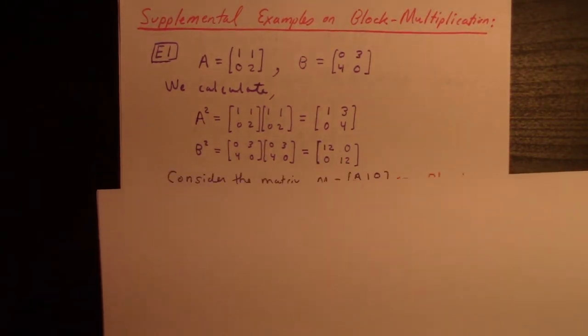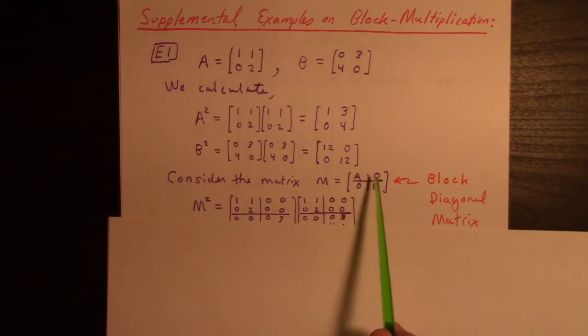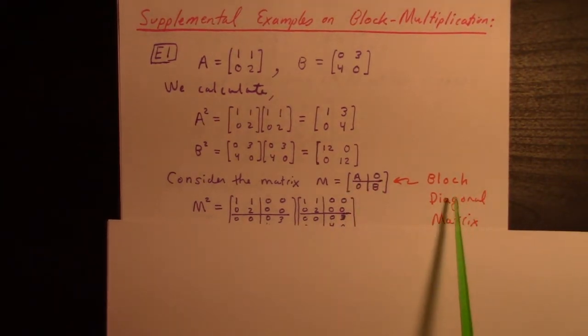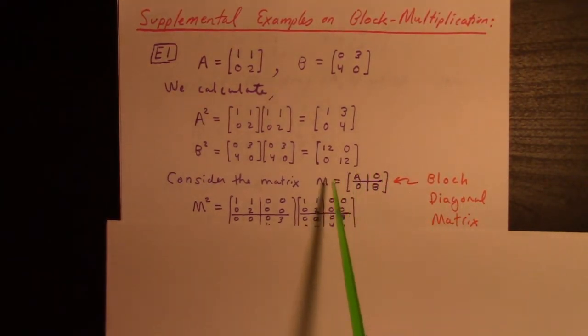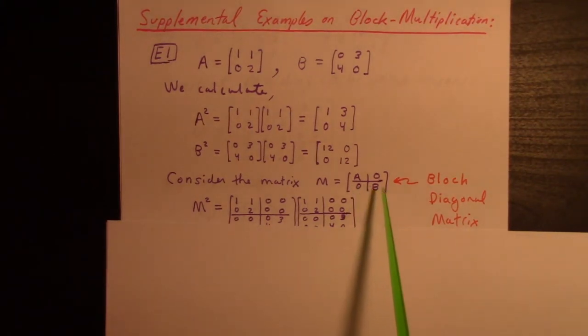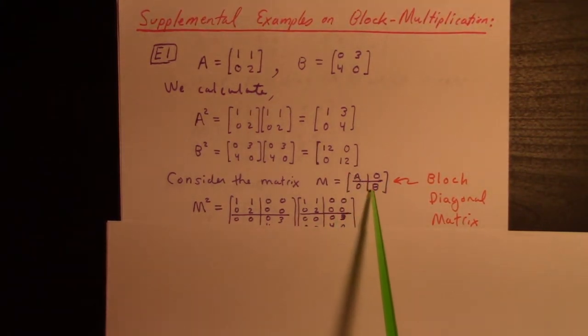If we consider the matrix [A 0; 0 B], this is a block diagonal matrix. It's not diagonal, but it's kind of diagonal if we count these 2×2 matrices as sort of numbers in a general sense.